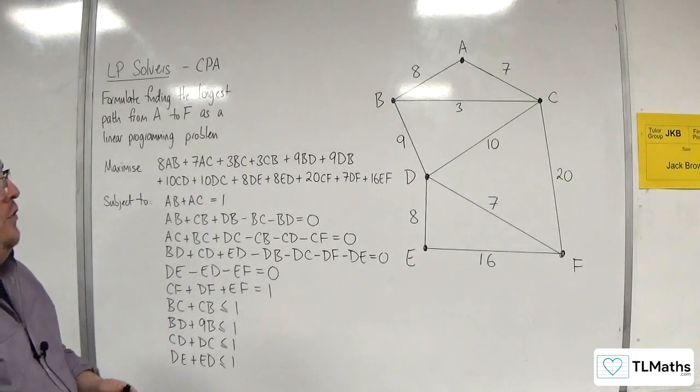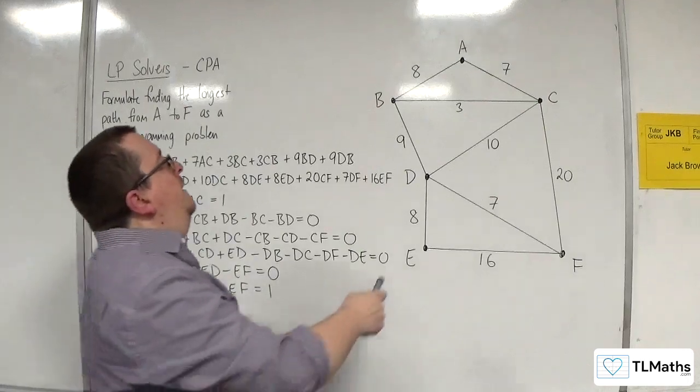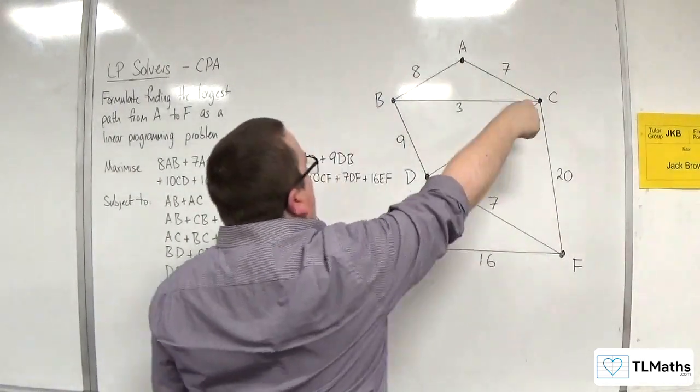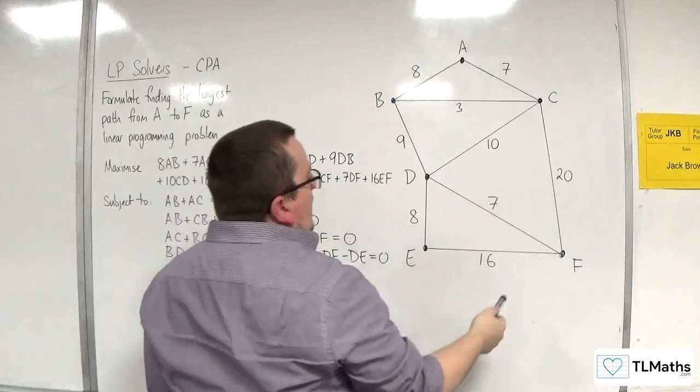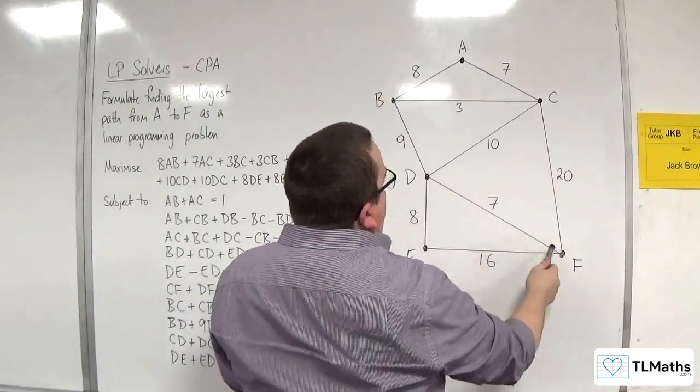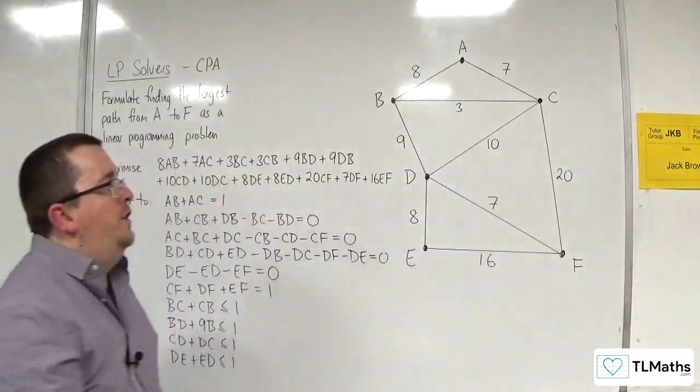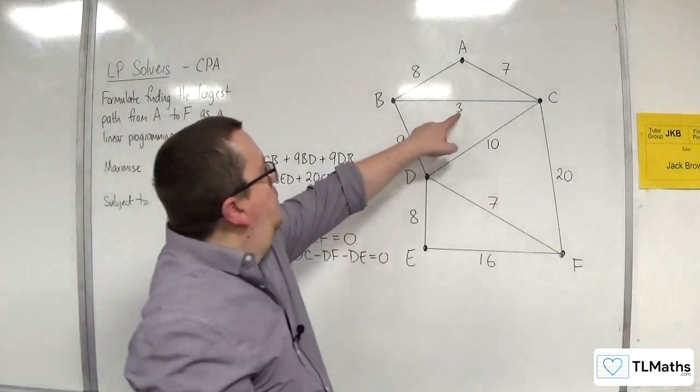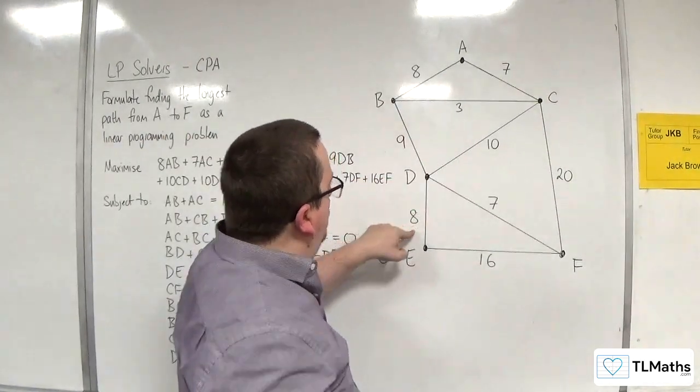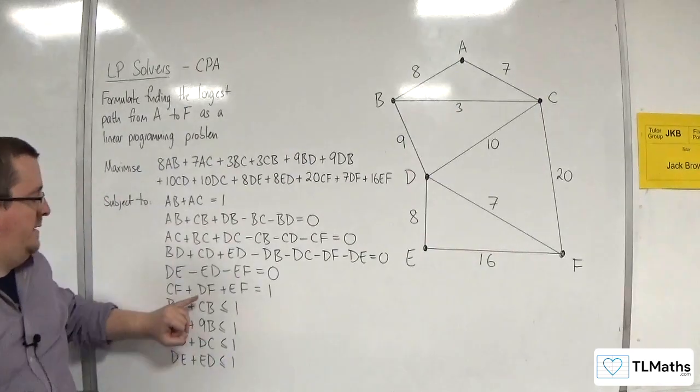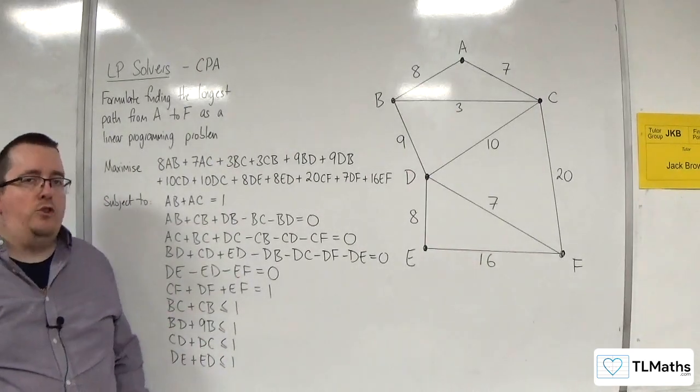The edges that can't be repeated are AB, AC because they're coming out of the start vertex, and FE, FD, and FC because they're coming out of the finishing vertex. But that one, that one, that one, and that one could potentially be repeated, and that's why we need those four extra constraints.